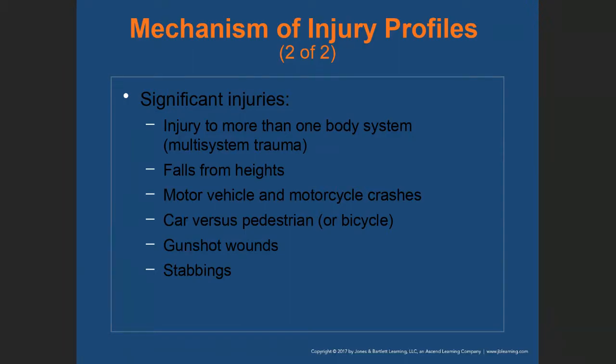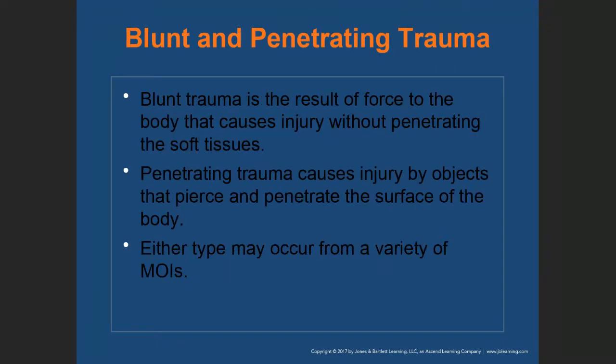Any fall in which the patient loses consciousness is significant. Motor vehicle or motorcycle crashes, car versus pedestrian or bicycle, gunshot wounds, and stabbings are all significant mechanisms. Blunt and penetrating trauma: blunt trauma is the result of force to the body that causes injury without penetrating the soft tissue — the skin remains intact and force is transferred below the skin, resulting in internal issues.